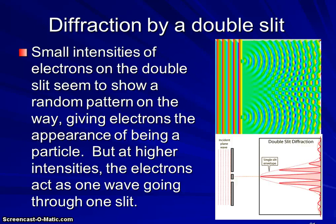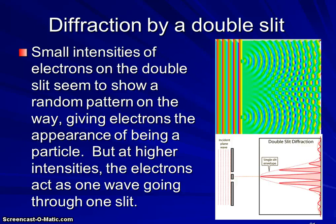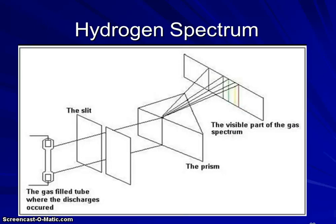All right, so in addition to this evidence that was put out in the 1920s, scientists in the early part of the 20th century were starting to look at the hydrogen spectrum. We mentioned this briefly in the first video. We have a gas tube filled with hydrogen. We force electricity through it. Light comes out. Same thing with neon and other gases.